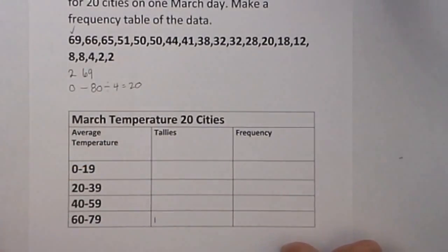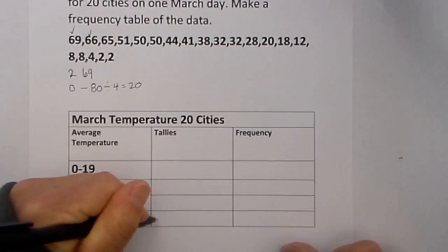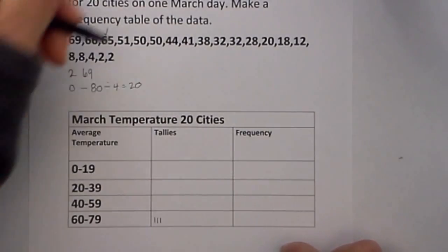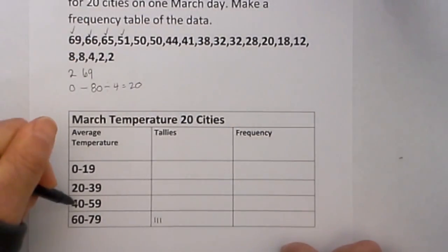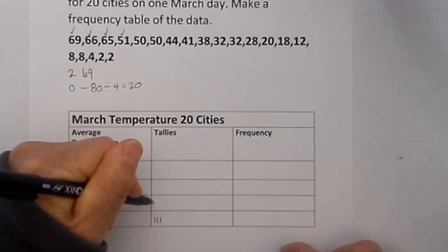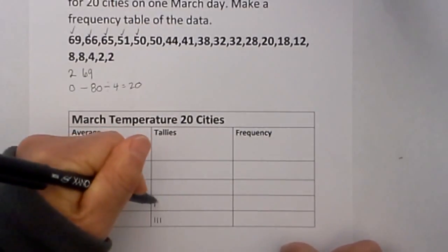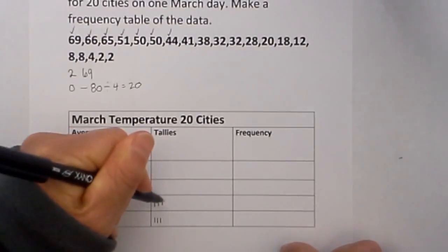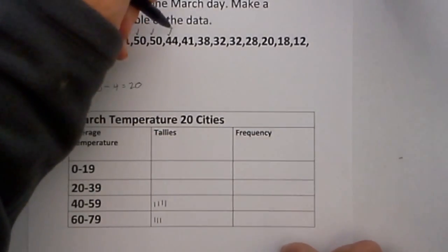So 69 then I will do a tally, 66 then a tally, 65 then a tally, 65 then a tally. I then move to 51 and I am in a different row so I will put a tally, 50 tally, 50 tally. Don't get lazy and not put a check and a tally.